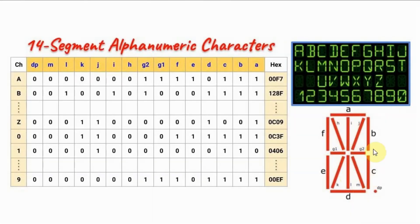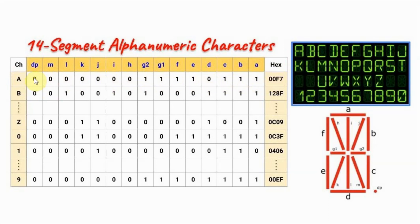The 14-segment digit can display one of the alphanumeric characters shown here. Each character is represented by a 15-bit value. For example, to display the character 'A', we send a specific 15-bit value with its corresponding hex value. The table shows all letters from A to Z and numerals from 0 to 9.